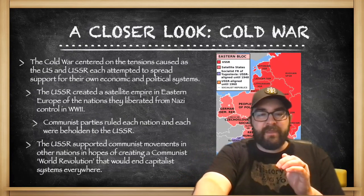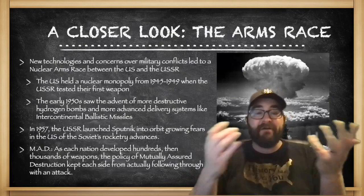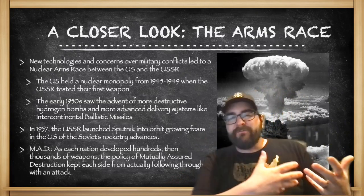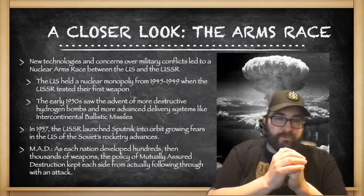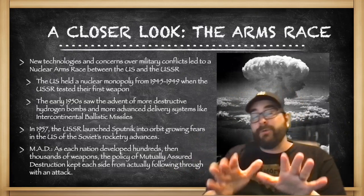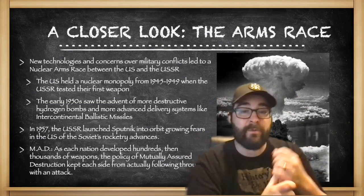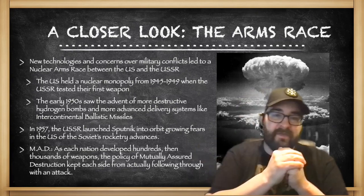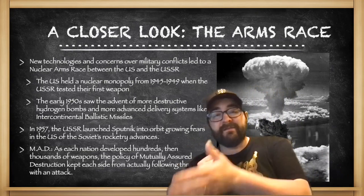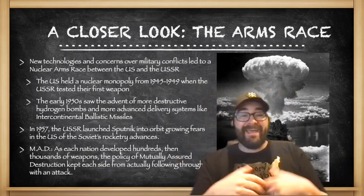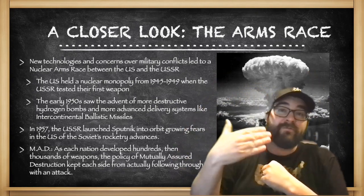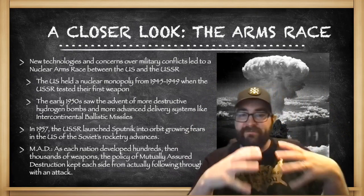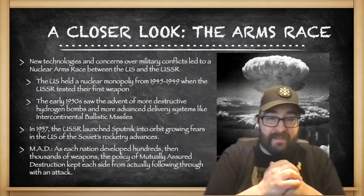To their part, the United States would look to rebuff that. The arms race that develops during the Cold War follows the development of new technologies that began during the Second World War with the development of the atomic bomb by the United States. The U.S. held a nuclear monopoly from 1945 to 1949 when the Soviet Union finally tested their first atomic weapon. The early 1950s saw the advent of even more destructive nuclear weapons like hydrogen bombs and more advanced delivery systems like intercontinental ballistic missiles. In 1957, this arms race was taken to space as the Soviet Union successfully put the first satellite into orbit called Sputnik, which the United States feared meant the Soviets had more advanced missile and rocket technologies.